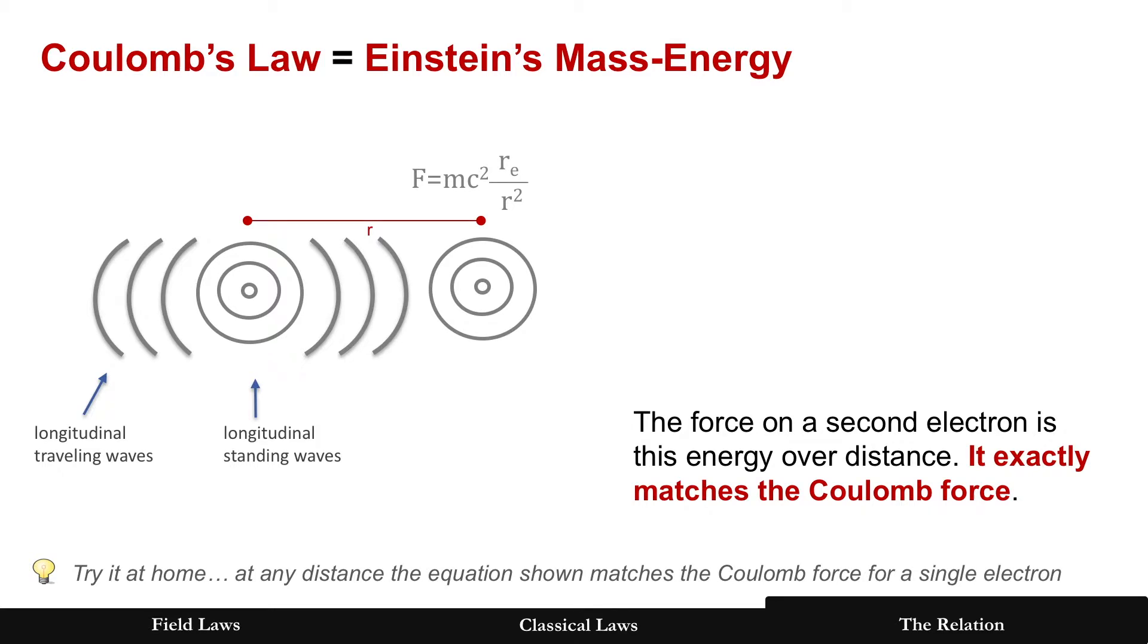At a second electron there, and now you have the force, and that force is the exact same thing I showed earlier: the energy, but now it's force, its energy at a distance and you see the r squared. Try this at home. All right, use the mass of the electron and the radius of the electron and you'll see that it's equal to the coulomb force.